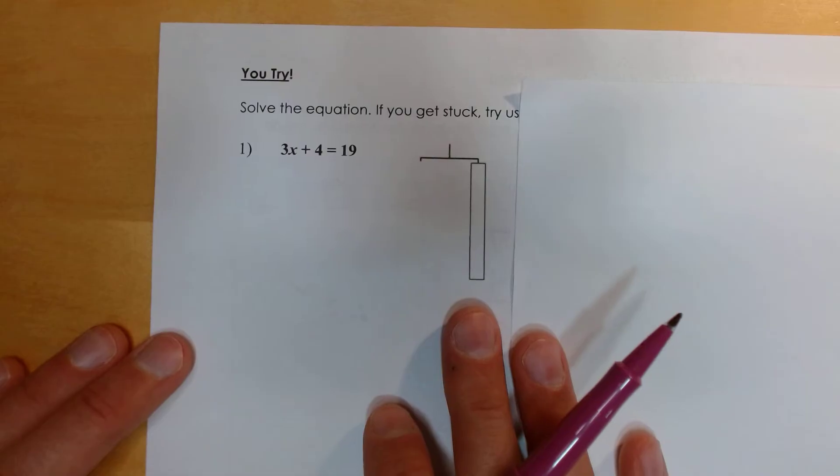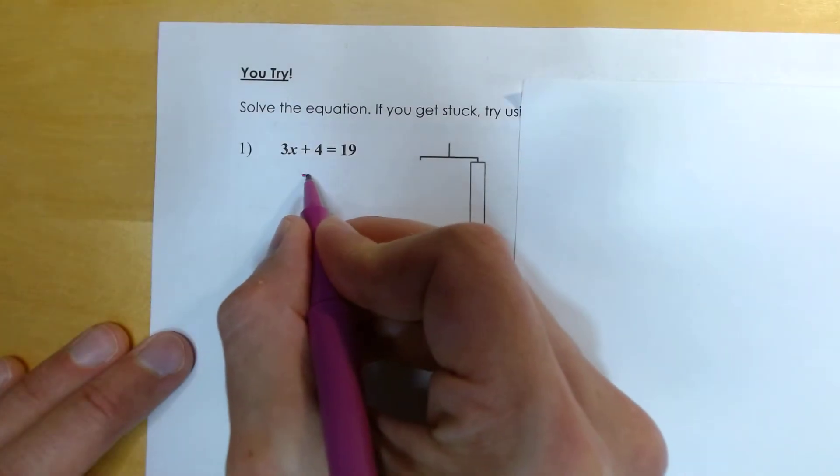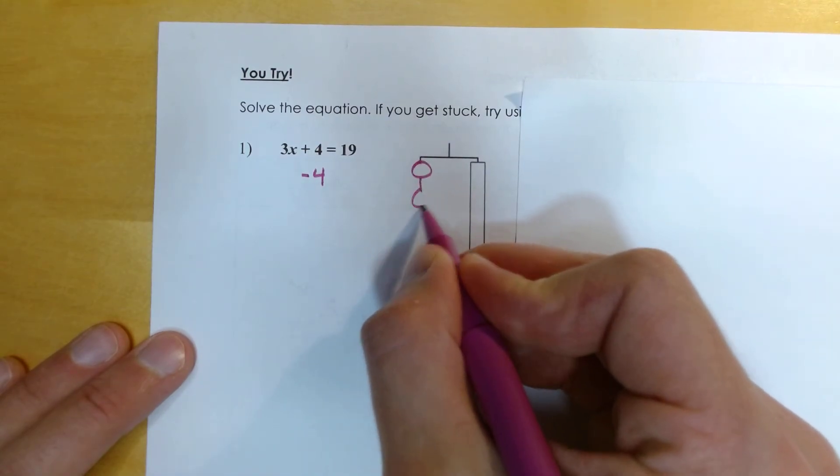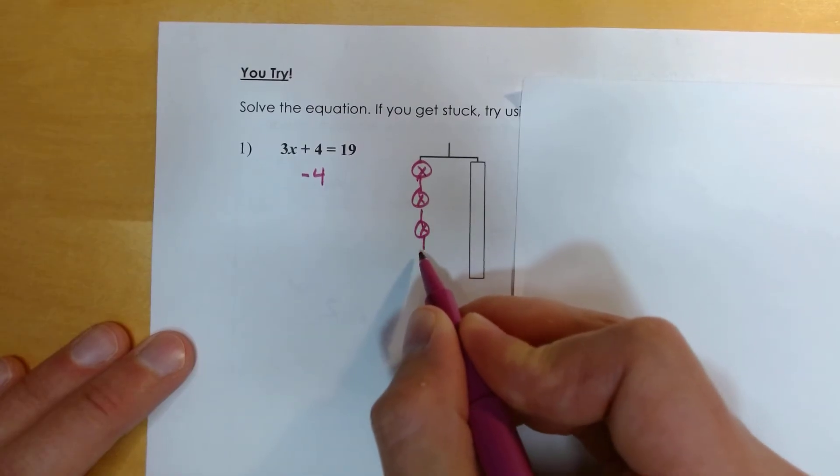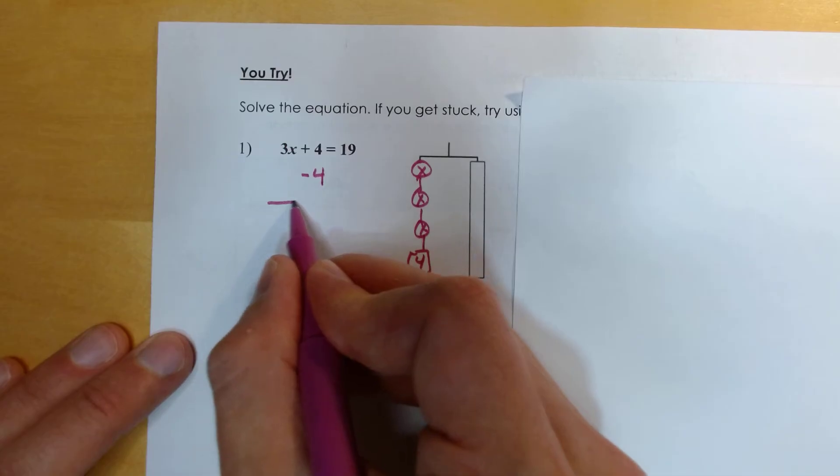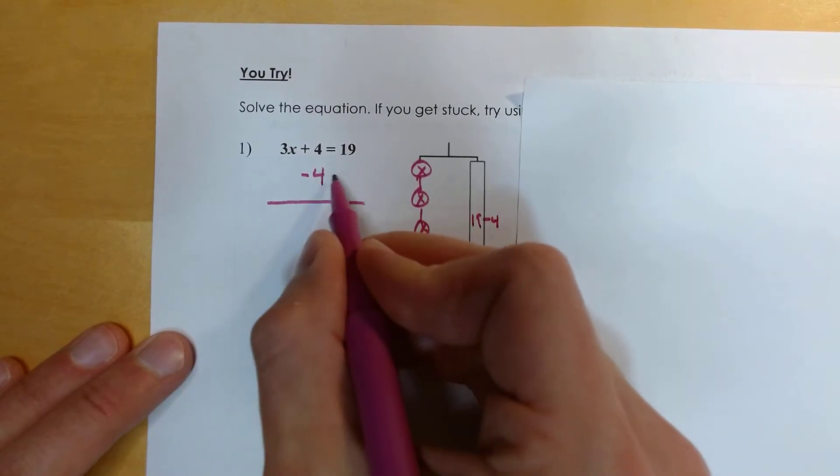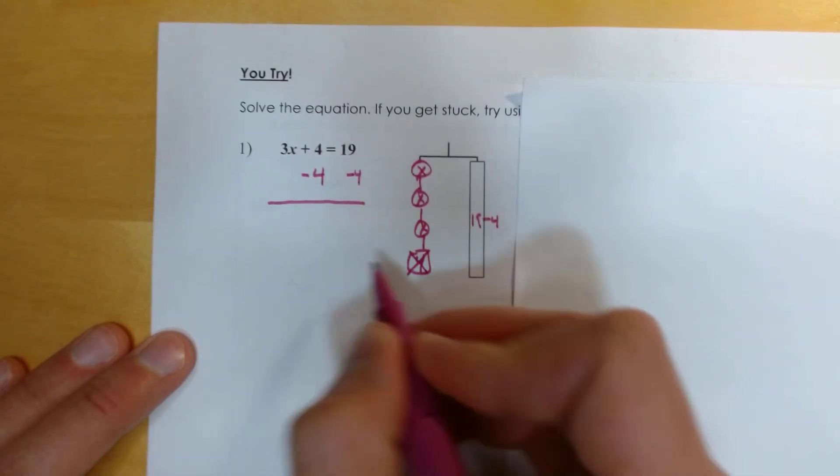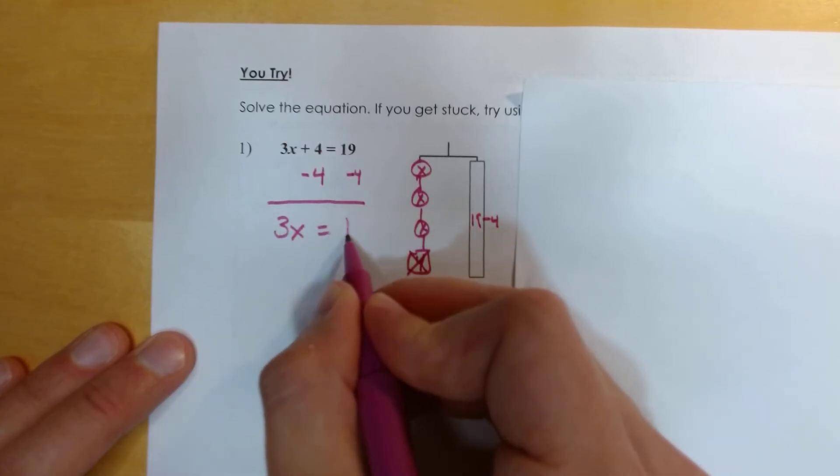3x plus 4 equals 19. So again, our first step was, let's take away the 4. So imagine we had 3 x's here, and then a 4. What we do first is we'd get rid of that 4. But if you do it to one side, you also have to do it to the other. So 19 minus 4. That's what keeps your equation balanced. So what we're doing is removing that 4. So I have 3x equals 15.